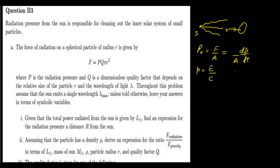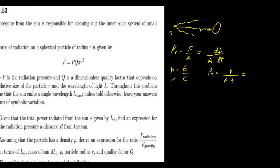Since we assume photons are not rebounding, we write radiation pressure as P divided by A times T. Using P = E/C, the radiation pressure equals E divided by (C·T·A). Here E/T is power (energy per second), so E/(T·A) is power per unit area, which is intensity.